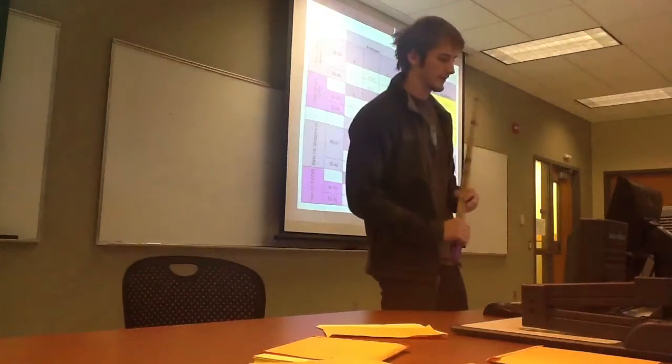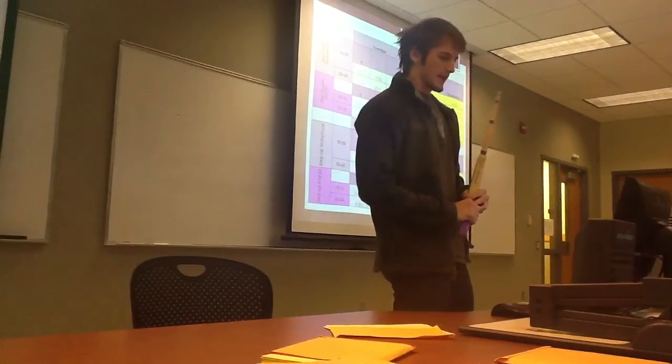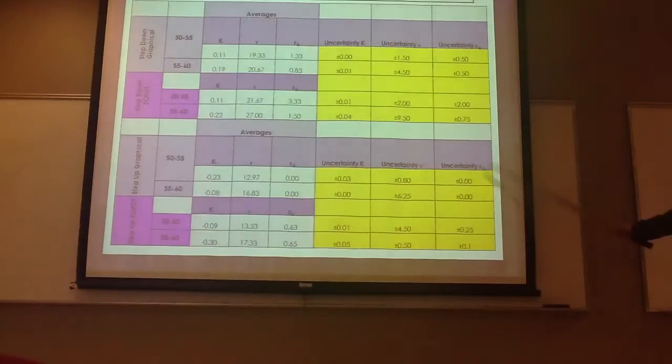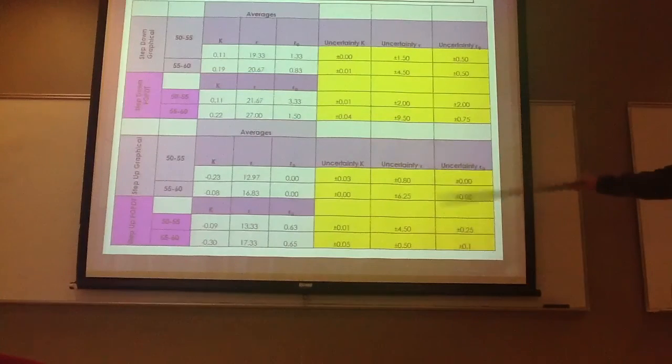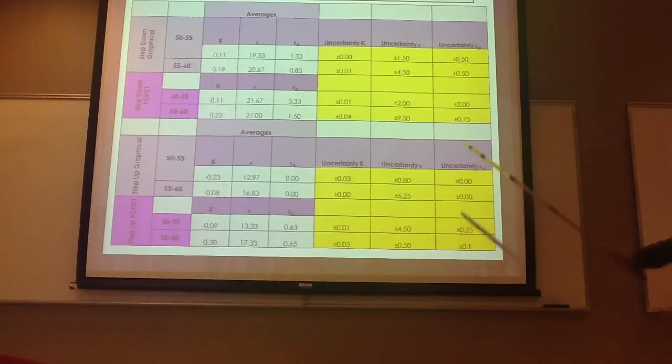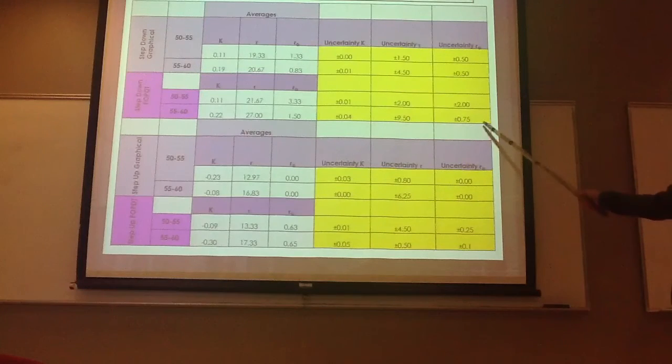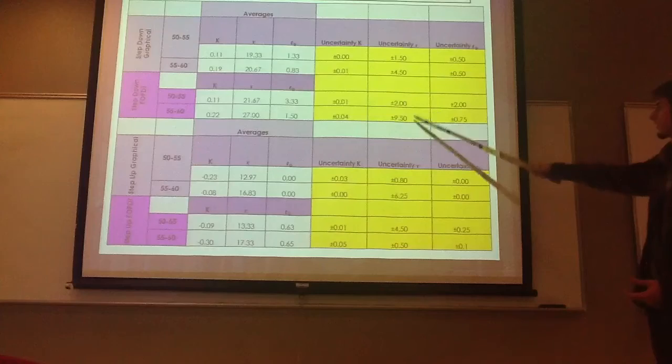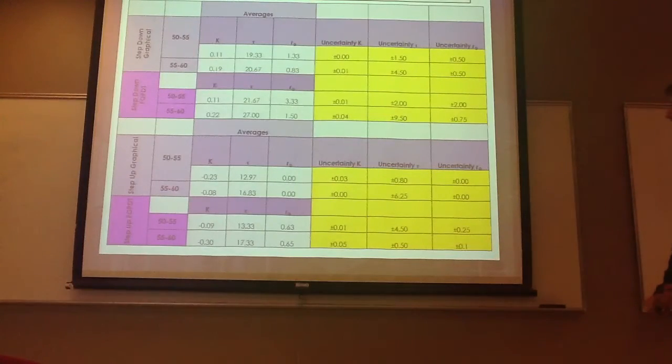Here's just all of them put together, and mainly I just wanted to show the uncertainties, how they are increasing as you go to the higher ranges. No, sorry. It increases when you go to the FOPDT, and I think that's just because we ended up being more accurate, so I keep seeing this increase here, except for here.